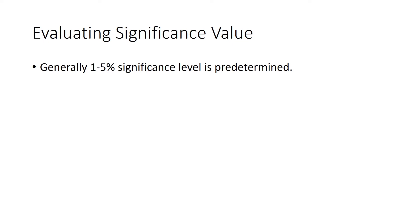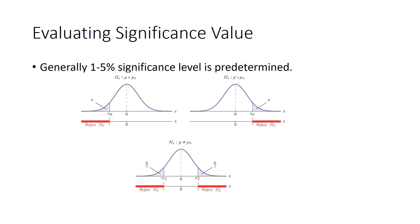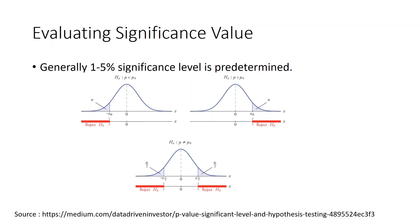Next is calculating the significance value. Generally a 1 to 5% significance level is predetermined. If you're confused with the terminology, refer to the 11th tutorial in this playlist. The significance value is determined by 1 minus alpha, where alpha is the critical region. Looking at the diagram, we have rejection regions on the left, the right, and on both sides — those are the three cases in which our hypothesis is evaluated.